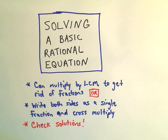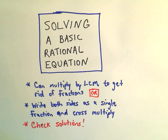In this video I want to do a couple of examples of solving some basic rational equations. There are a couple different ways you can solve rational equations — everything gets you to the same solution. One way is to multiply both sides by the least common multiple of the denominators, which will get rid of all the fractions. Or you can write both sides of the equation as a single fraction and then cross multiply.